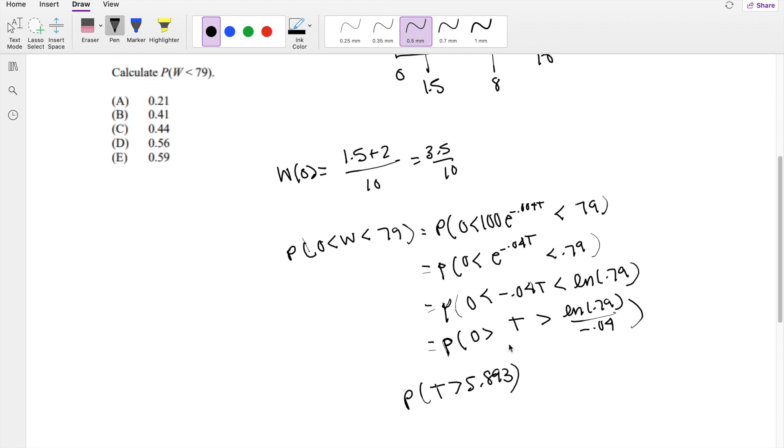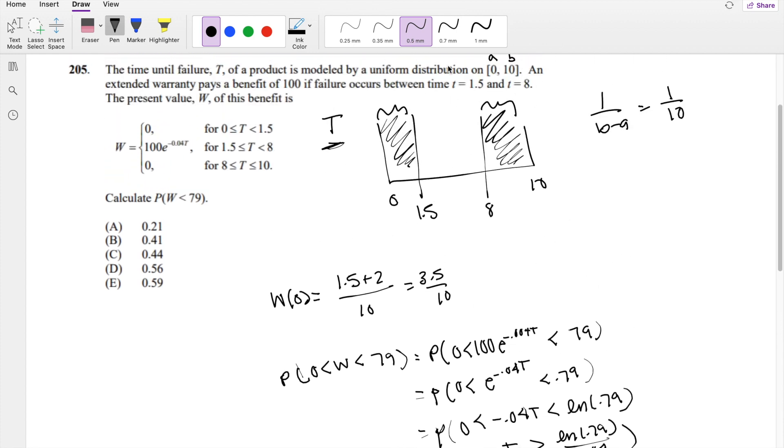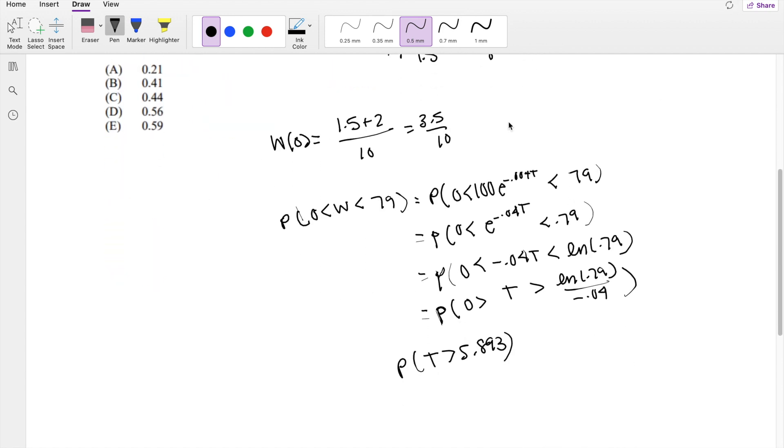But we know 5.893 is like here. So W is bounded by the upper limit of 8, because we already figured out the probability from here to here and from here to here. If we count this part again, we're double counting. Also, W is only true when T is less than 8. So the upper limit is 8.